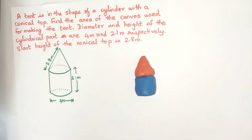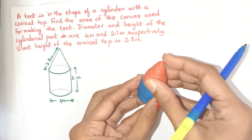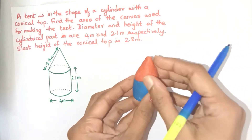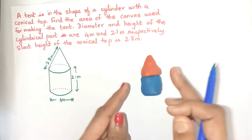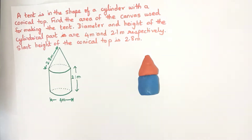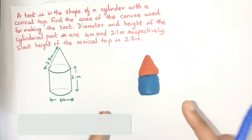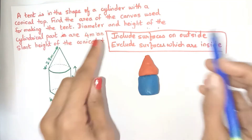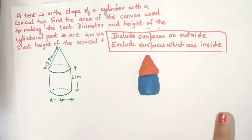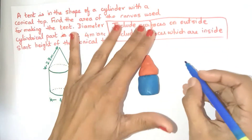In this example we have a tent which has a cylindrical base and a conical top. We have to find the area of canvas needed to cover this tent, so in short we need to find the surface area of this solid. Again let's use the guideline: include surfaces which are on the outside and exclude surfaces which are inside.